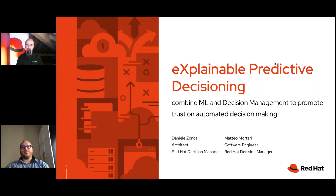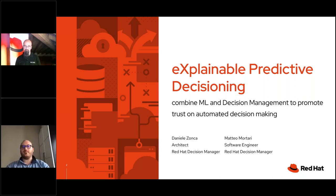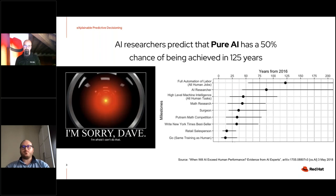Today we're going to explain how we can do explainable predictive decision making by combining ML and decision management to promote trust in automated decision making.